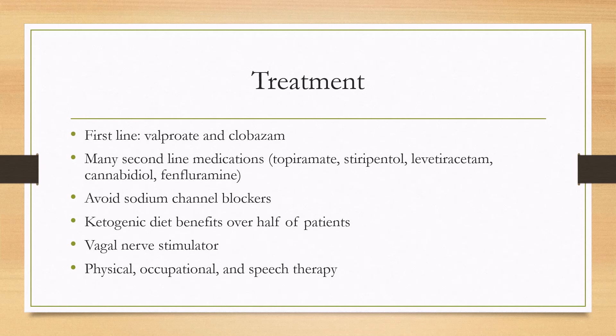Treatment: the first-line medications are valproate and clobazam, and these can be used alone or in combination. There are many second-line medications, but the important thing to know is that sodium channel blockers cannot be used in this disease. If the first-line medications fail, ketogenic diet can be a good option as it benefits over half of patients. A vagal nerve stimulator can be used as an adjunctive treatment. For motor and speech delays, physical therapy, occupational therapy, and speech therapy can be helpful.